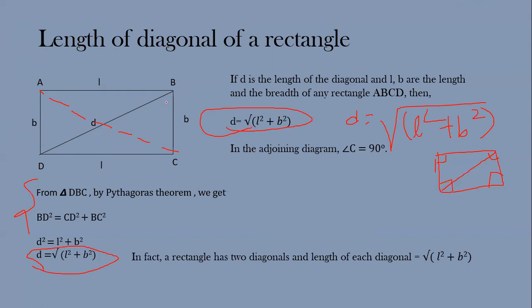A diagonal connects opposite vertices of a quadrilateral — specifically here a rectangle. Since this quadrilateral has four vertices, joining opposite vertices gives us two diagonals. A rectangle has two diagonals, and the length of each is √(l² + b²).